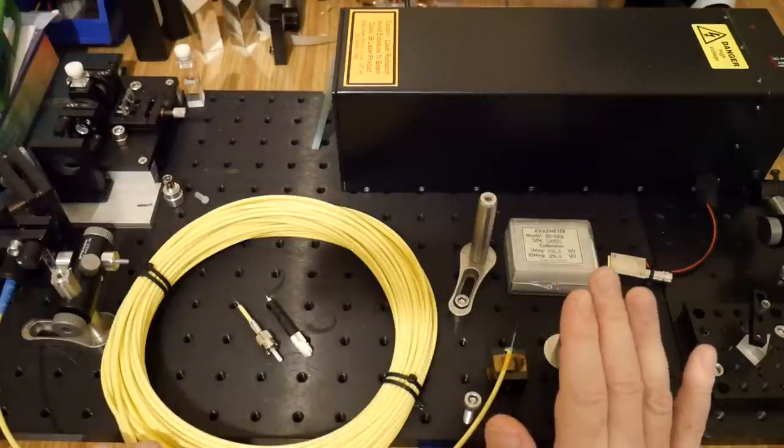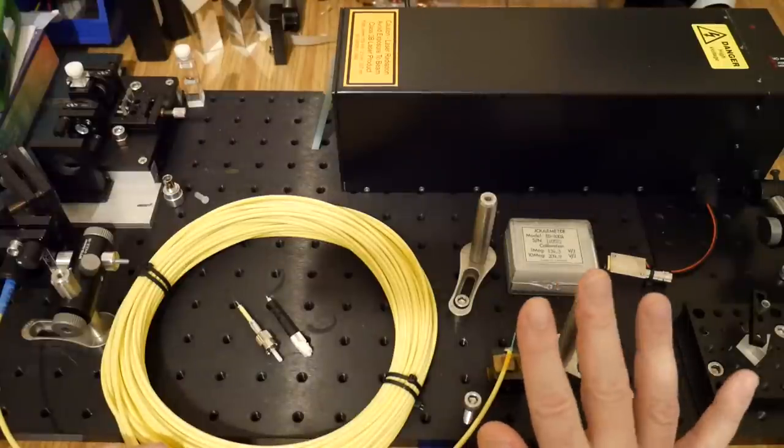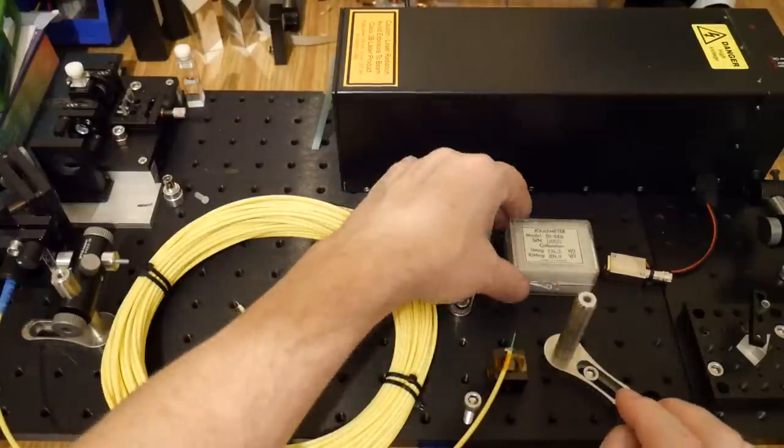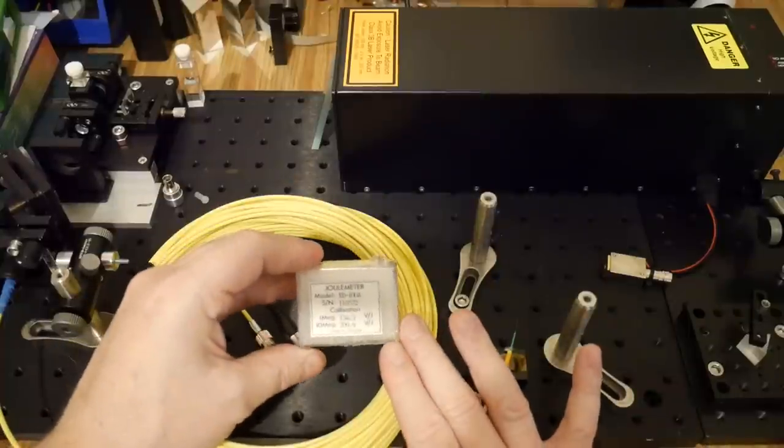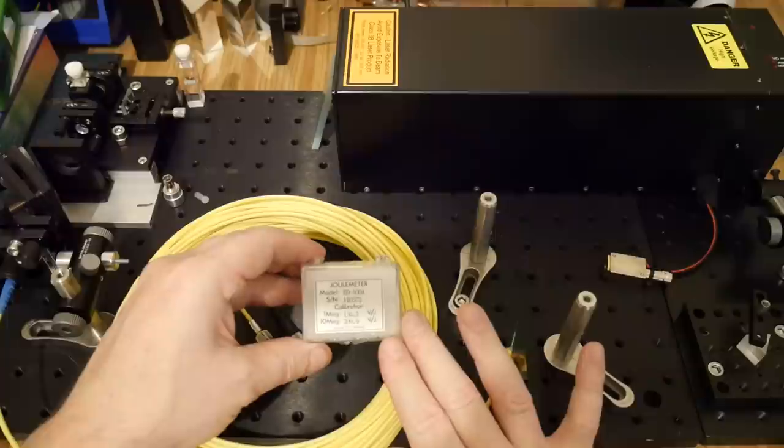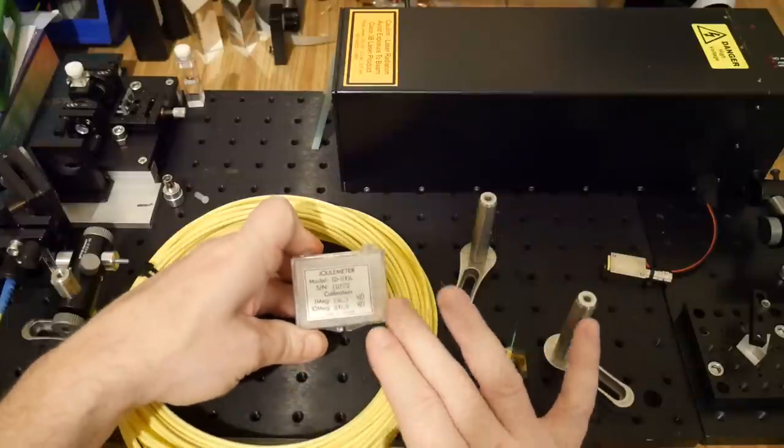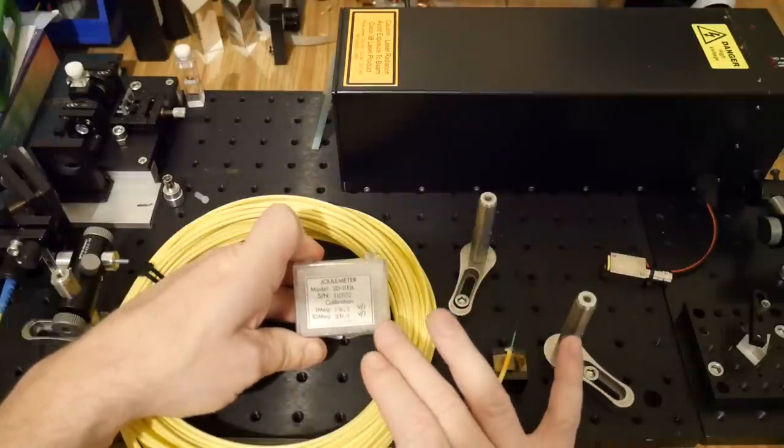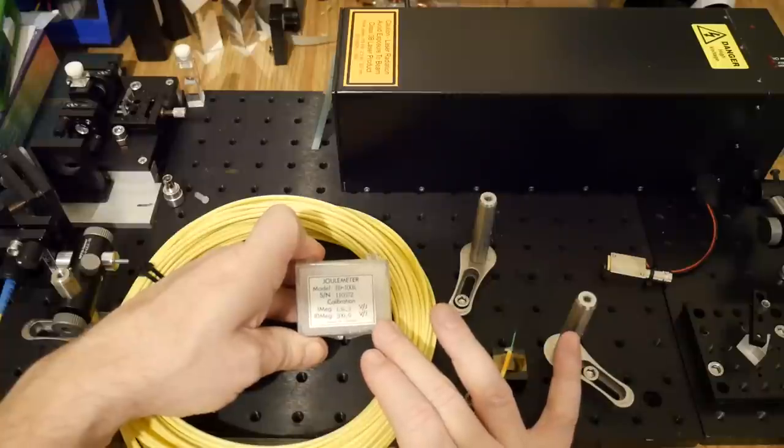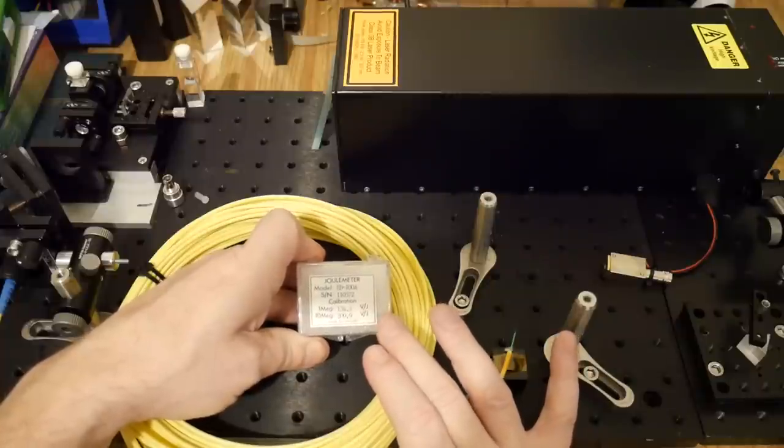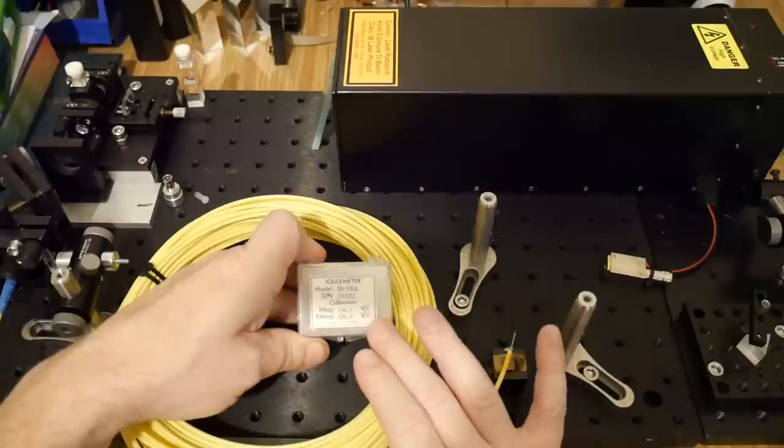In order to measure pulsed lasers like this we actually need two sensors to do the job. The first is a joule meter. This doesn't measure in the time domain at all, it just measures joules. The idea is we mount the sensor in this beam path and we actually read off a signal using an oscilloscope.